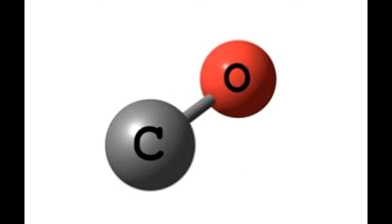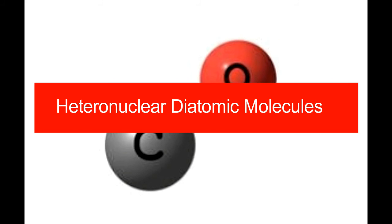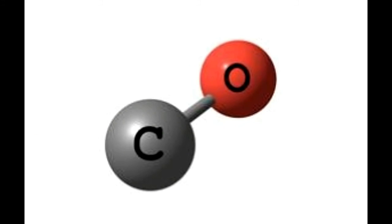A heteronuclear diatomic molecule is made of two atoms of different elements joined by a chemical bond. Some molecules that exist as diatomic molecules at room temperature are HCl, CO, CN*, NO*, etc. These molecules are usually polar in nature because the shared pair of electrons experiences an unequal pull from the two nuclei and is pulled toward the more electronegative atom, giving rise to a delta minus and delta plus charge. These molecules are also planar in nature.